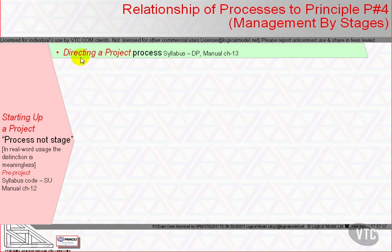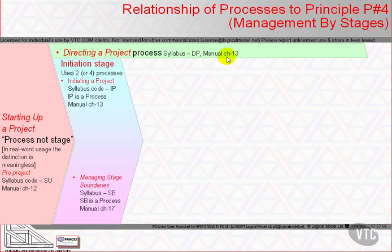The second process is Directing a Project. It too is a collection of activities rather than part of a stage. Its syllabus code is DP and its manual chapter is 13. Its activities direct the project and include all of the project board's decision-making actions.